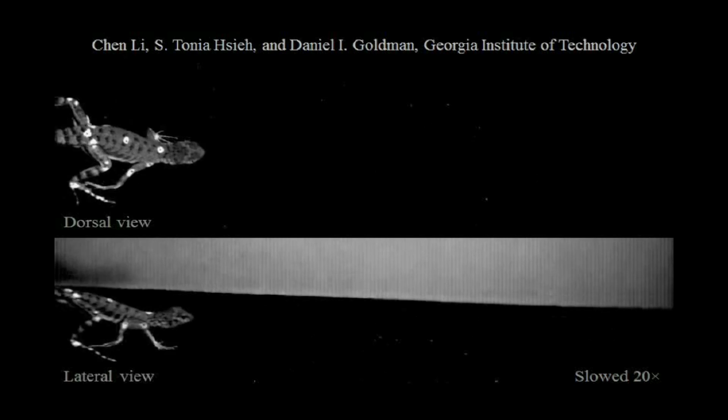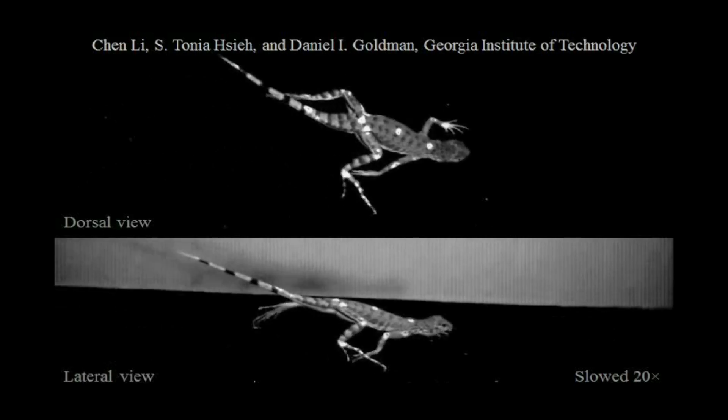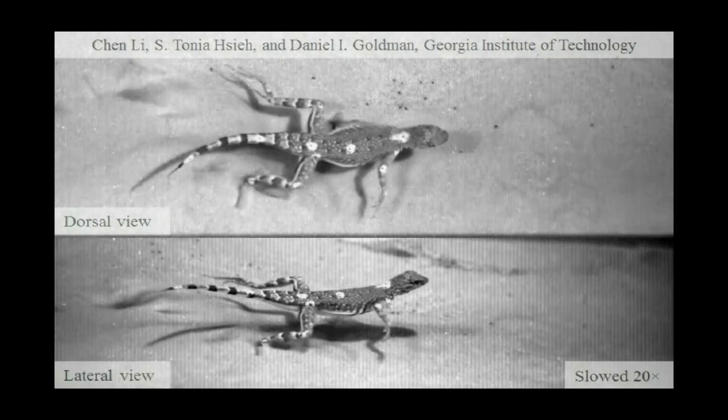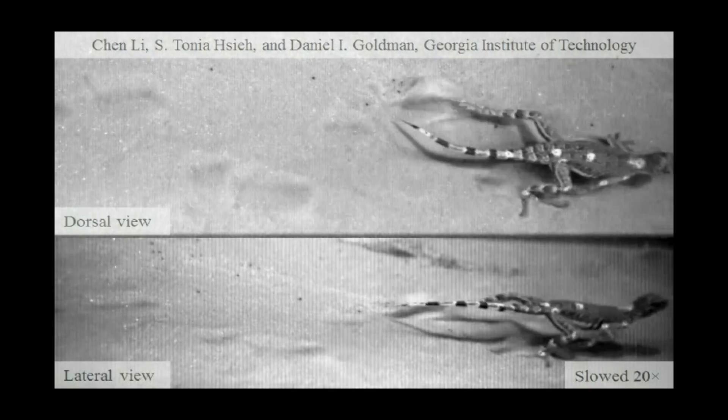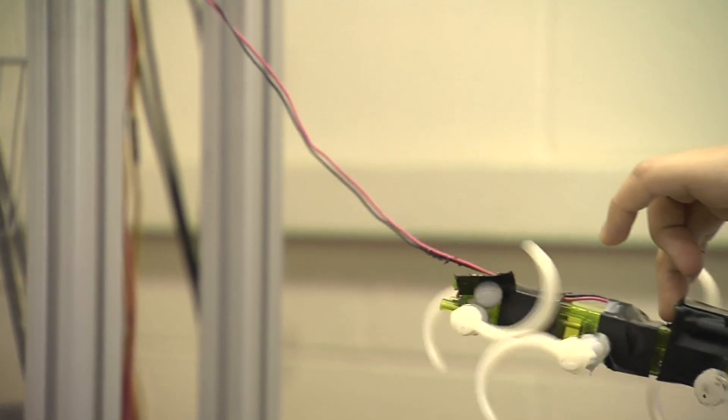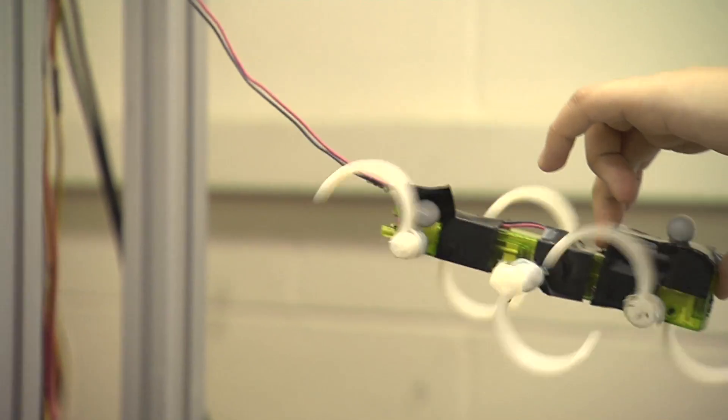One component that allows animals to move so well is that they have limbs and legs which can be multifunctional. They can allow the animal to climb over ledges, sprint rapidly over hard ground, paddle through soft ground, and even potentially kick through fluids. We're interested in exploring how limbs can enable robots to move around with the agility and mobility that some animals with limbs have.